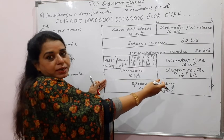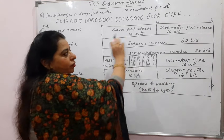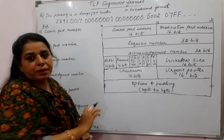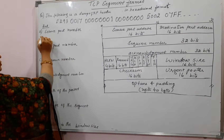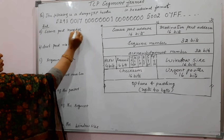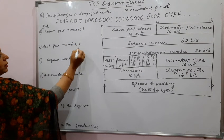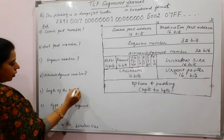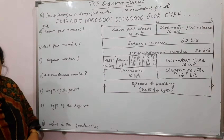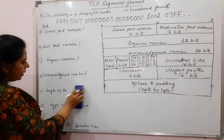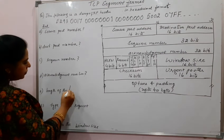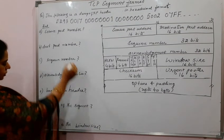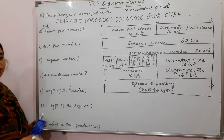I have shown the TCP header here for each of these fields. Those are the values given in the problem statement, and they have asked you to find out: what is the source port number, what is the destination port number, what is the sequence number, what is the acknowledgement number, what is the length of the header, what is the type of the segment, and what is the window size. These many things you need to answer.